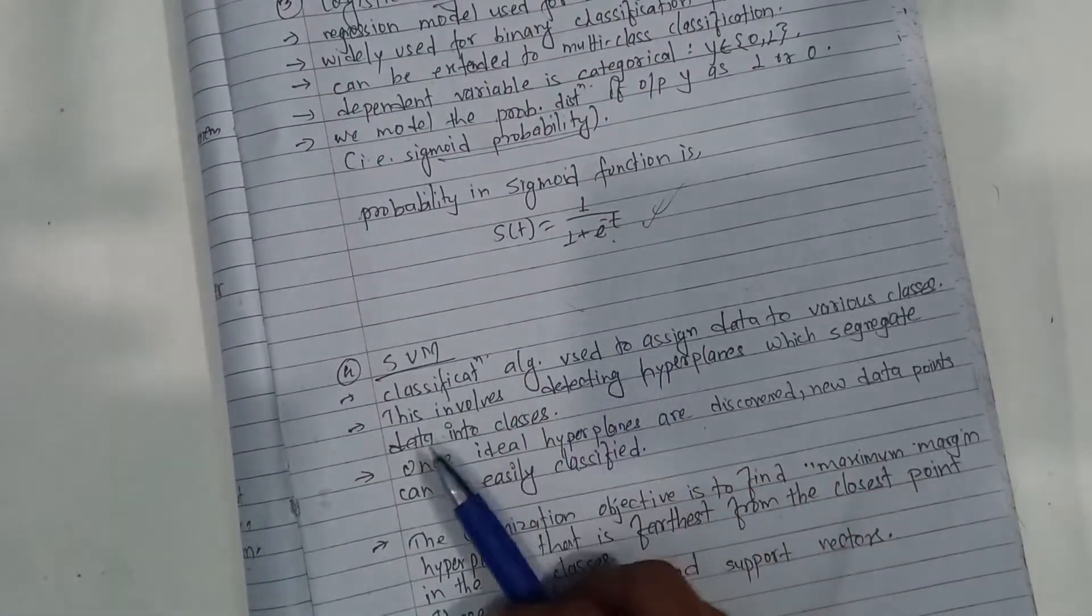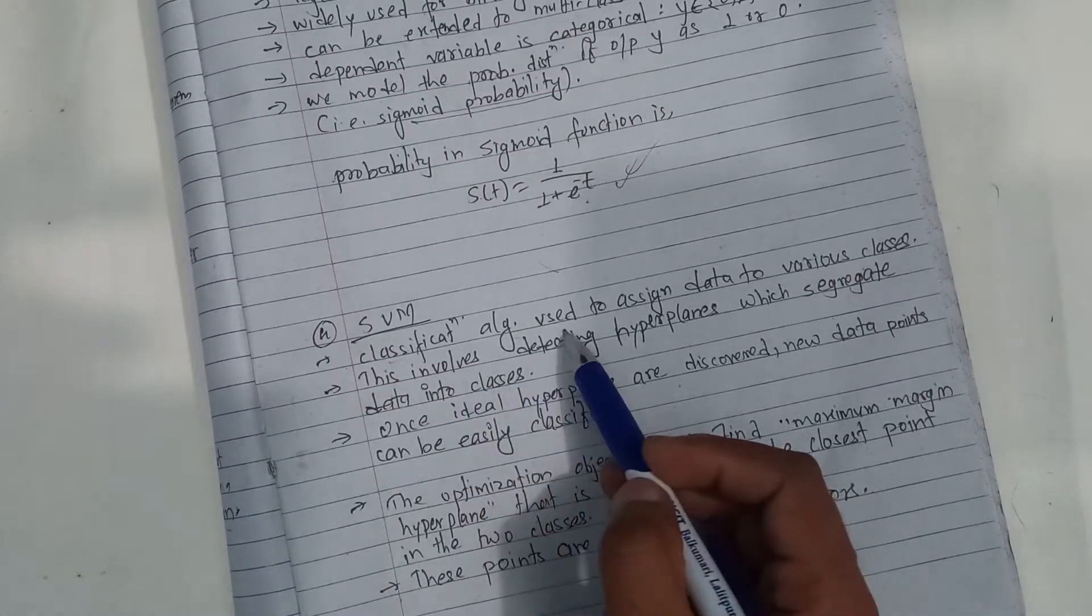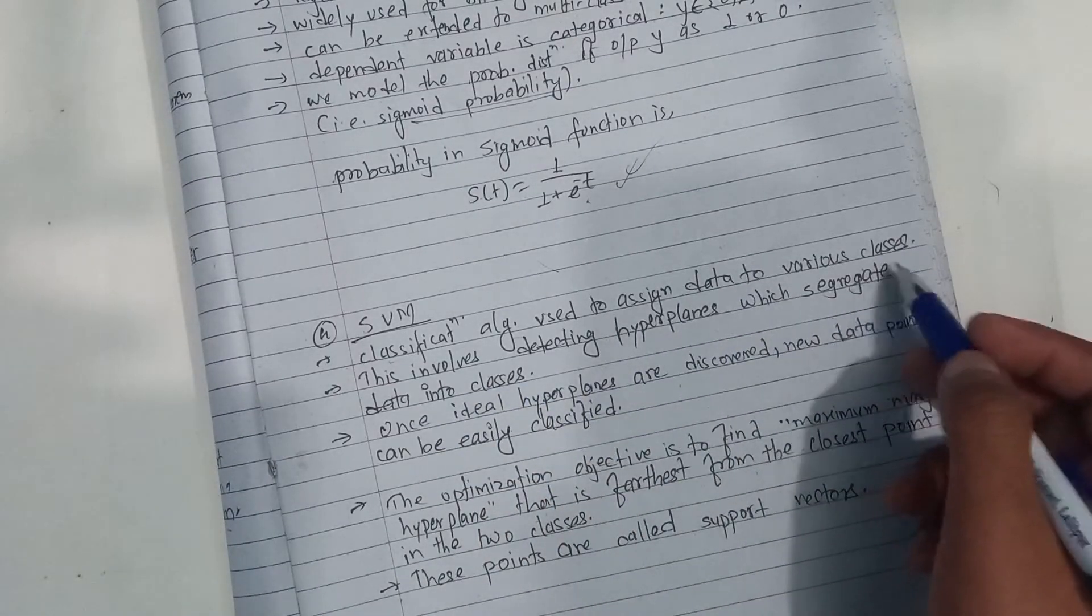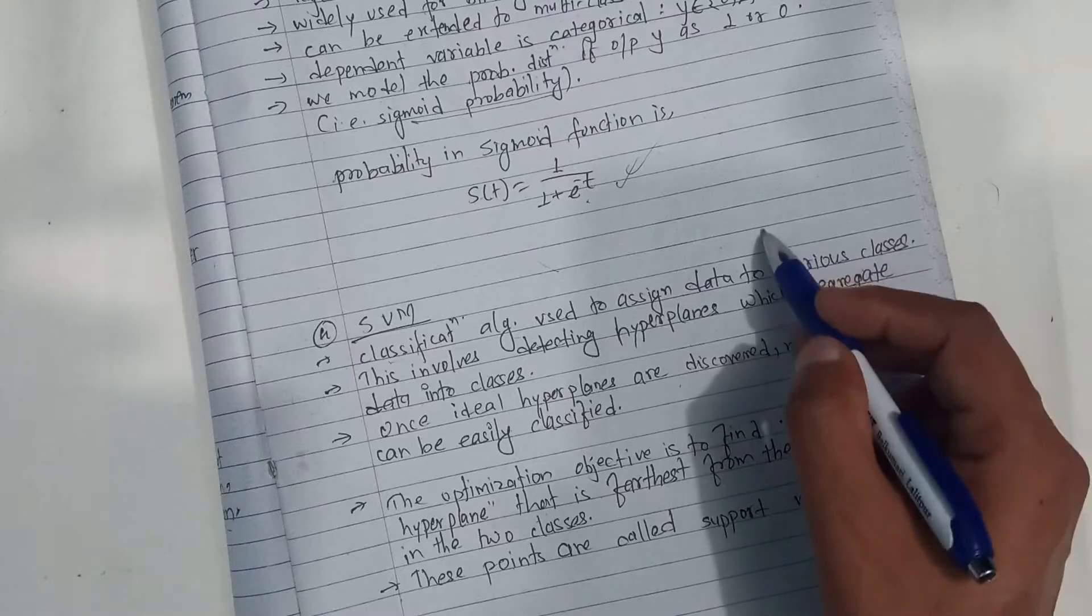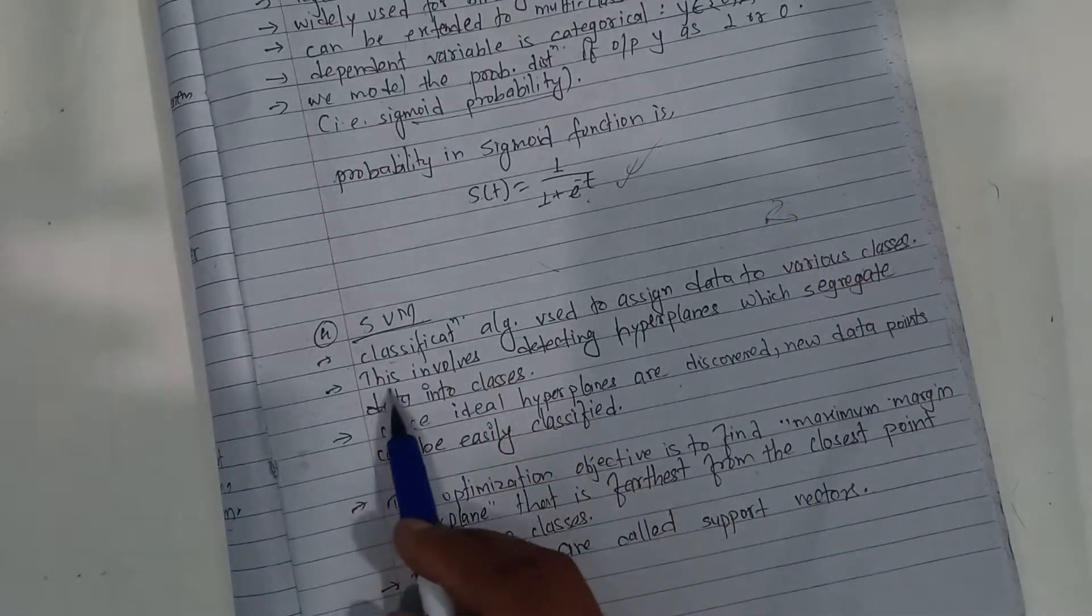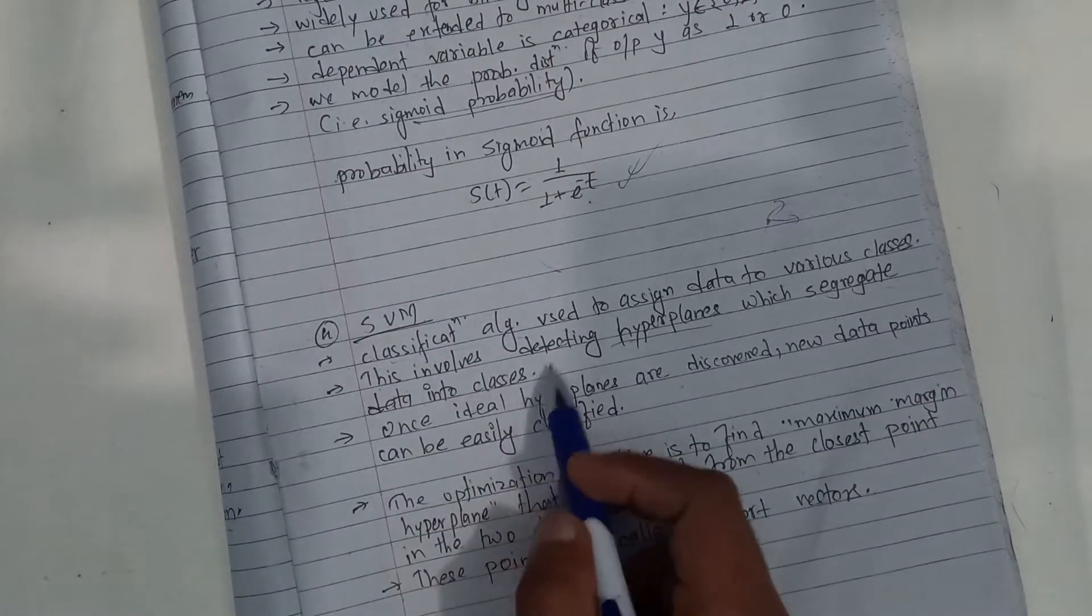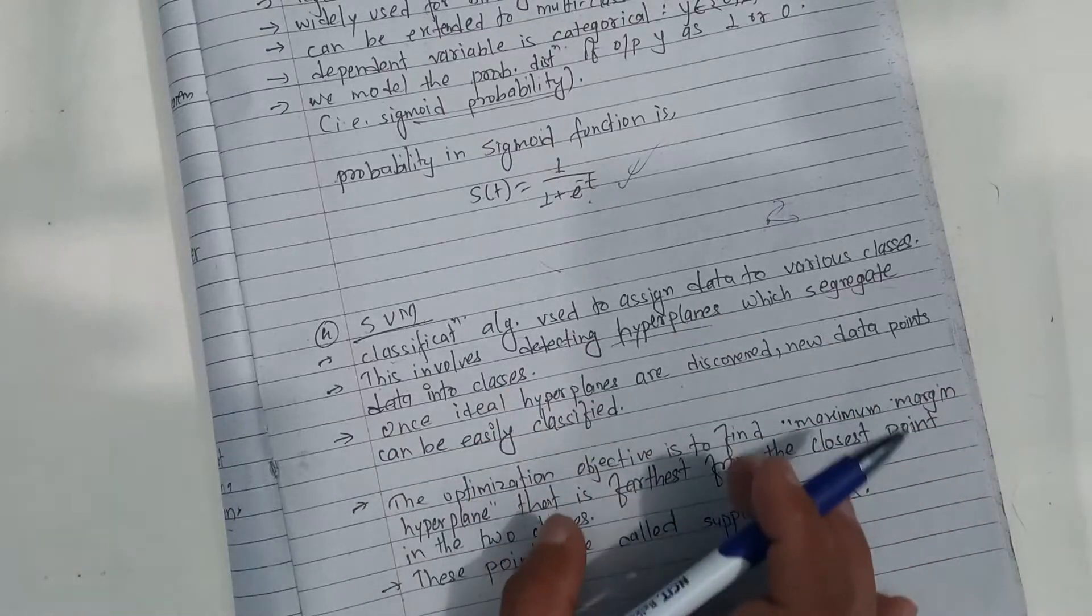So, this is Logistic Regression. Now, the support vector machine. The support vector machine is used to assign data to various classes. This involves detecting hyperplanes which segregate data into classes.